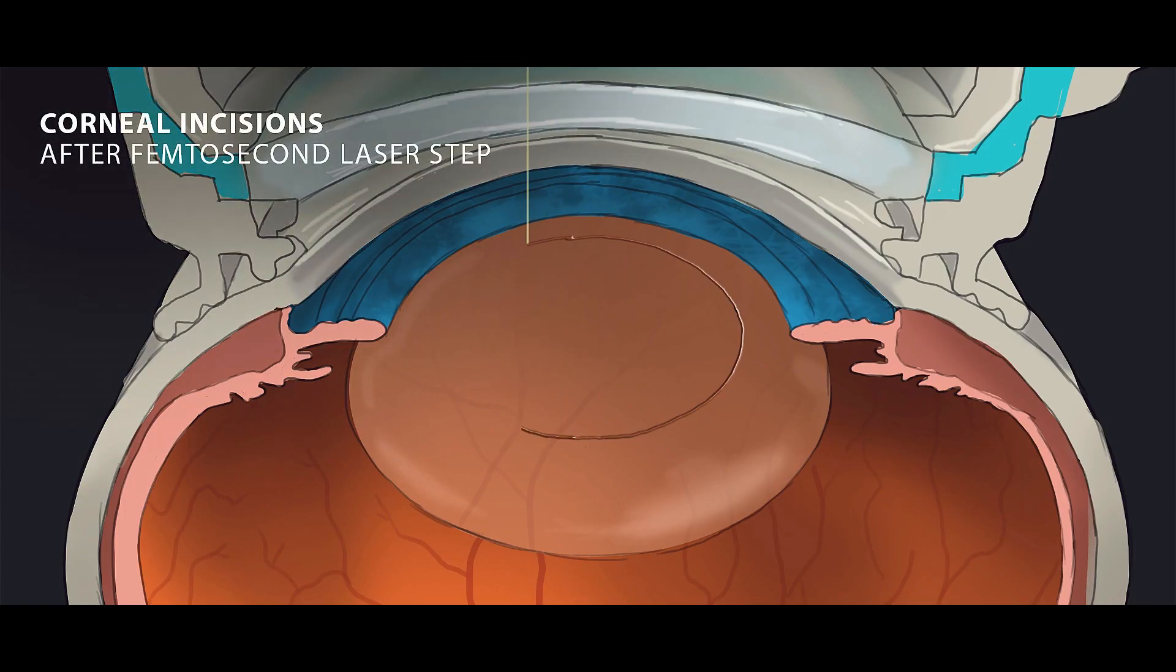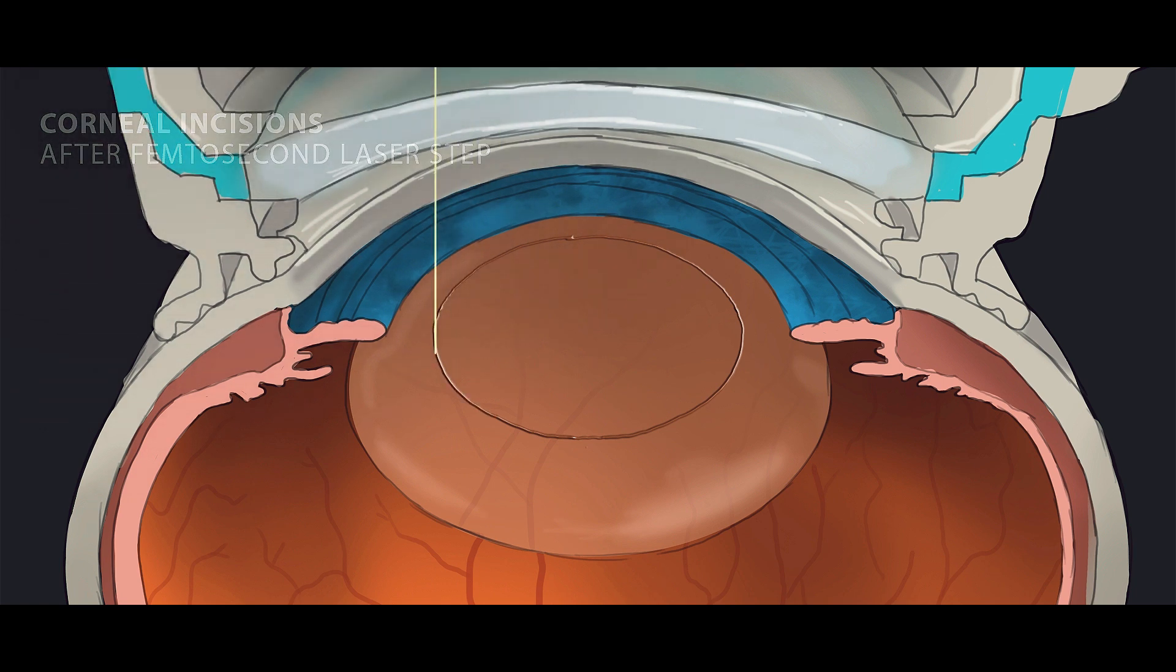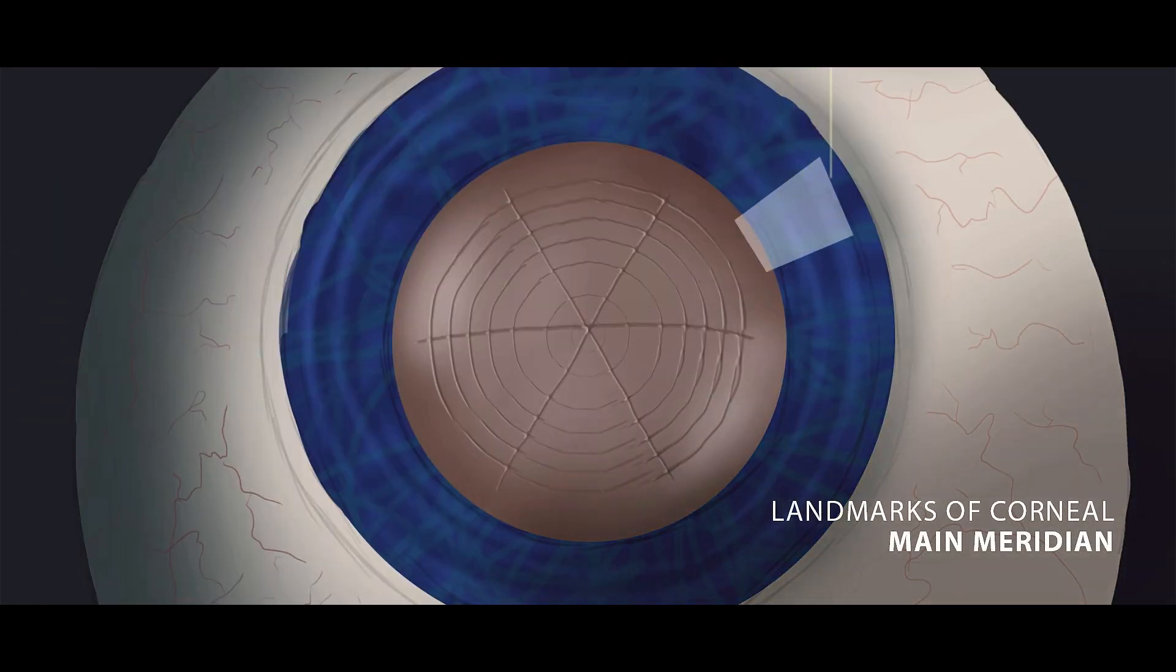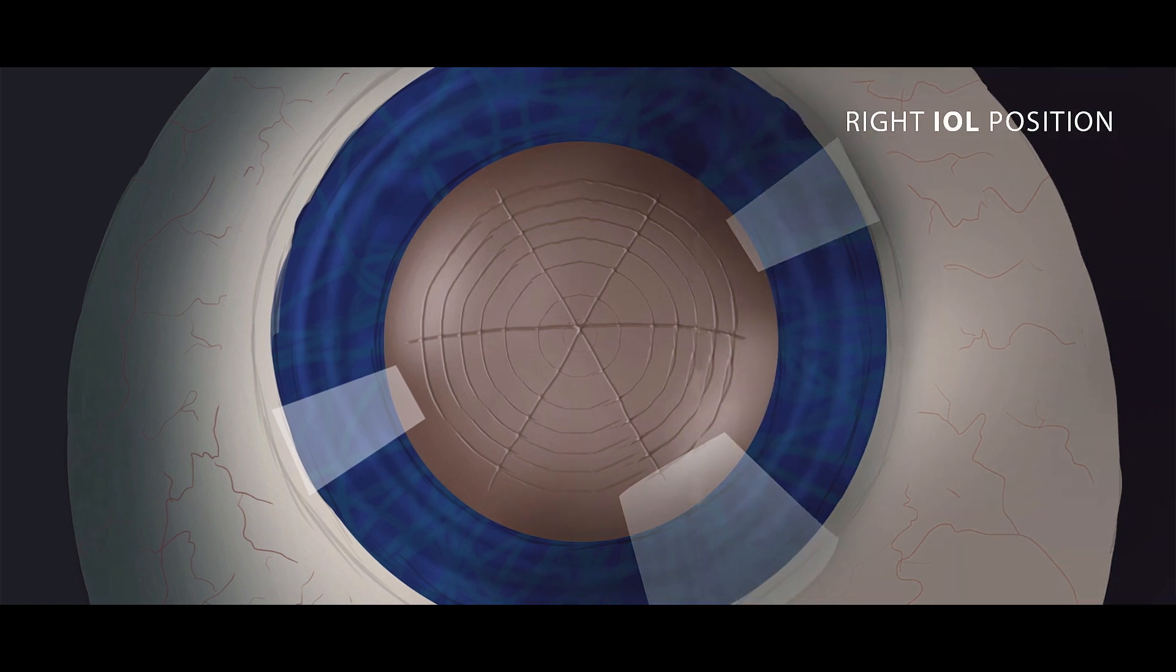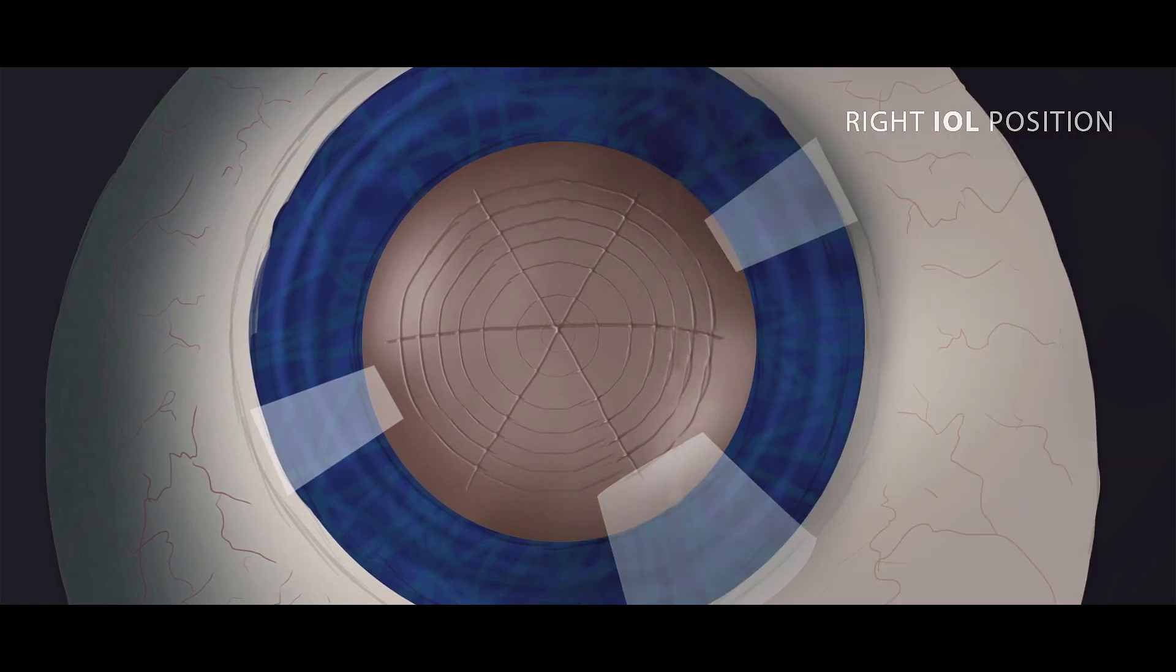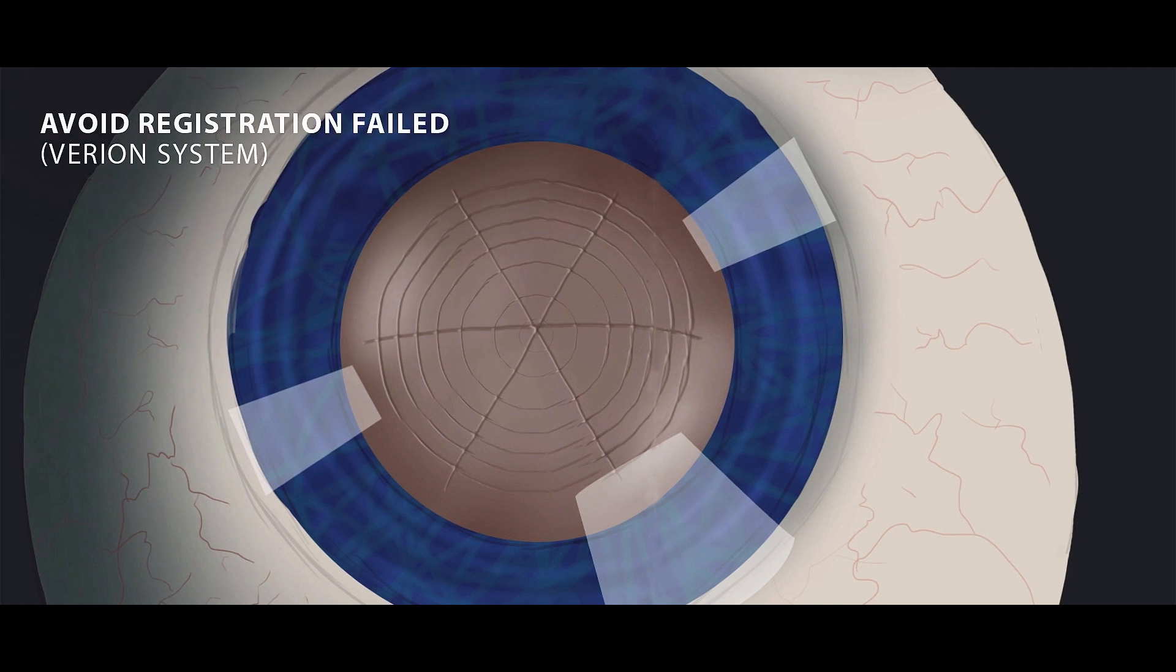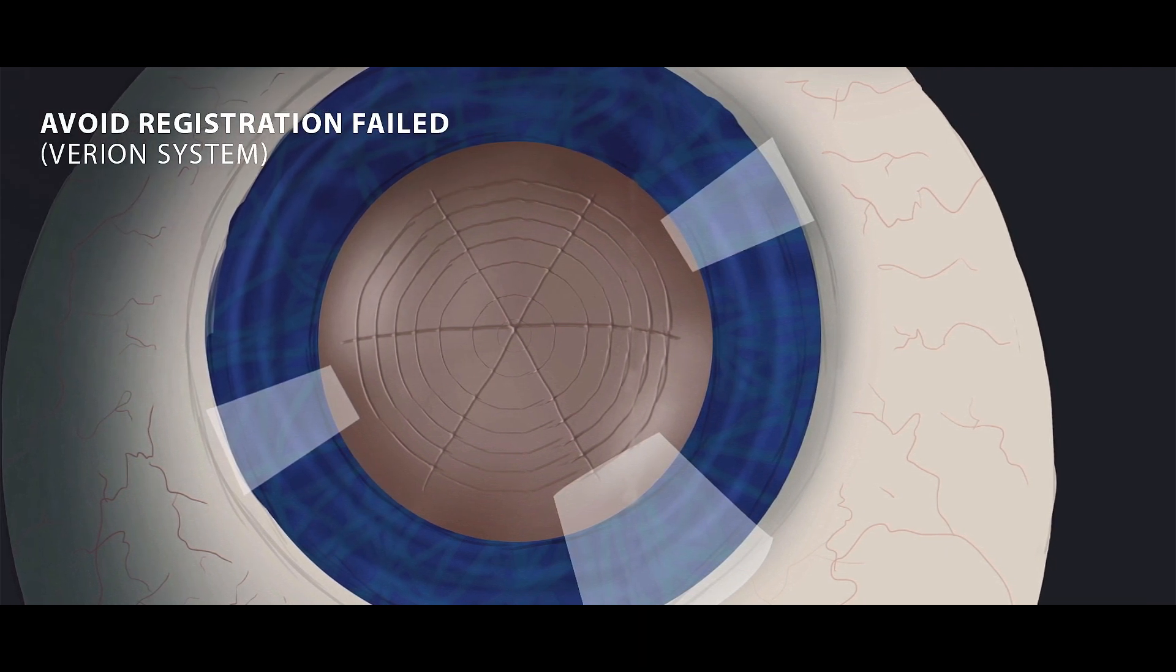Thus, registration incisions of the cornea performed using a femtosecond laser and the Variant navigation system allows accurate identification of the main meridians of the cornea and proper toric IOL positioning. This avoids error in comparison of photo images made before and after docking in the Variant image guidance system following the laser step of the surgery.